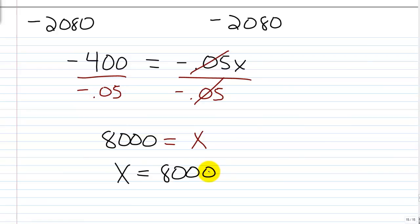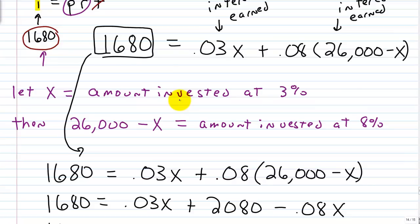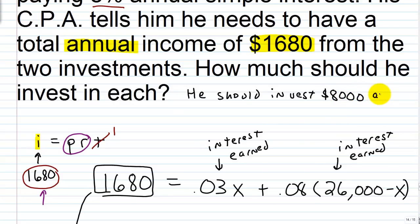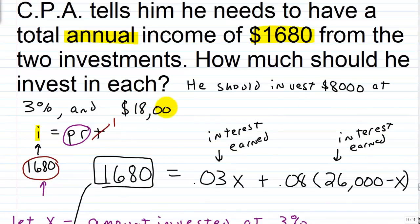When you solve for your variable, don't just stop there — you need to interpret what x means. Going back, x is the amount invested at three percent, so x equals 8,000 means he should invest eight thousand dollars at three percent. Since the total invested is 26,000, the amount at eight percent is 26,000 minus 8,000, which equals eighteen thousand dollars at eight percent.